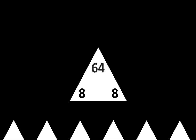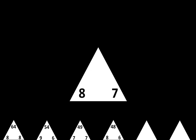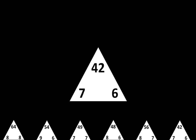Let's move to the last row. The next one is 8 times 8 is equal to 64. The next one is 9 times 6 is equal to 54. The next one is 7 times 7 is equal to 49. The next one is 8 times 6 is equal to 48. The next one is 8 times 7 is equal to 56. And the last one is 7 times 6 is equal to 42.